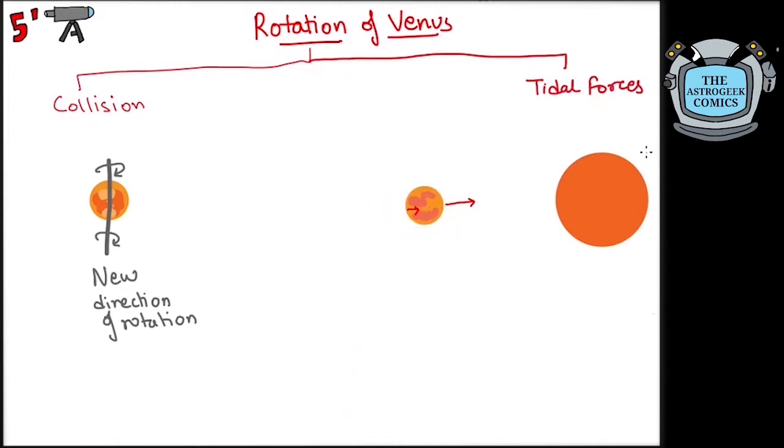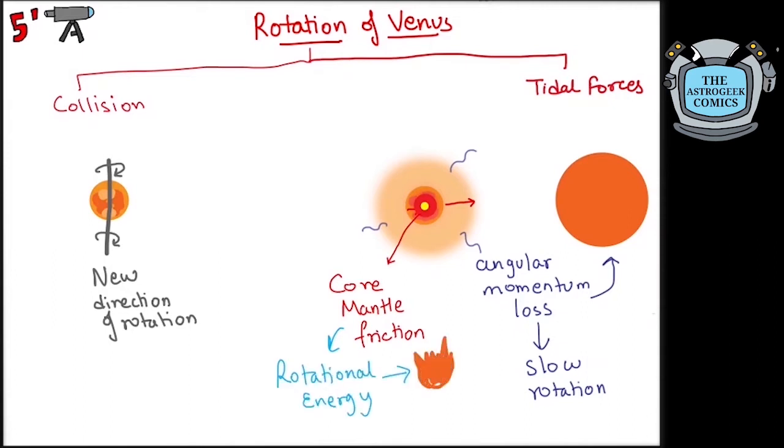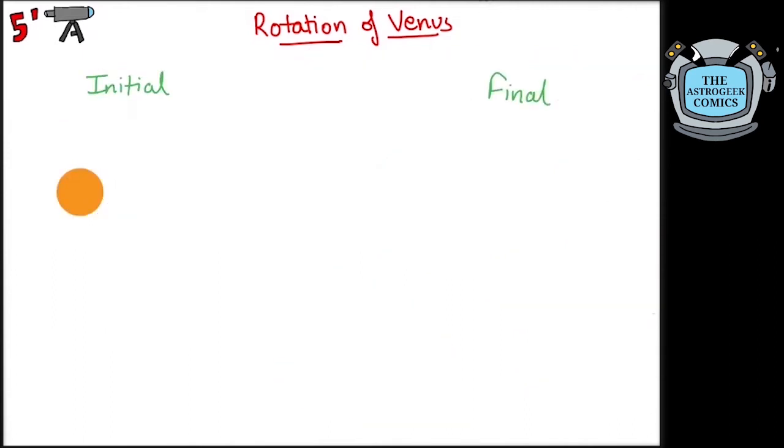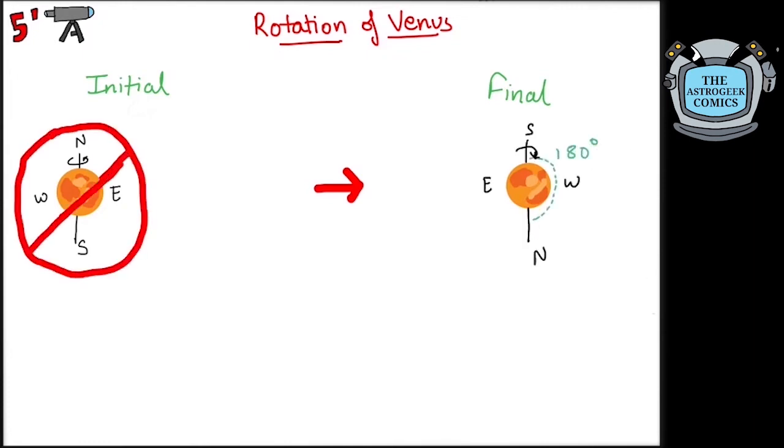In terrestrial planets with thick atmosphere like Venus, the action of tidal forces can significantly make the planet lose angular momentum and hence rotate slower. This combined with the friction between the core and the mantle explains further loss of rotational energy as heat. These would also cause the spin axis to become oblique up to 180 degrees. But models have shown that this is more probable if Venus had a higher obliquity of its spin axis to begin with.